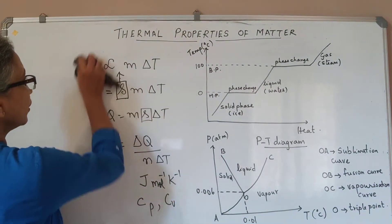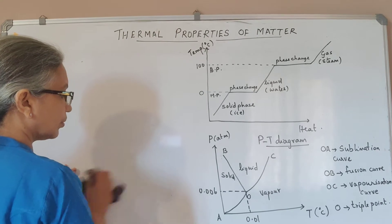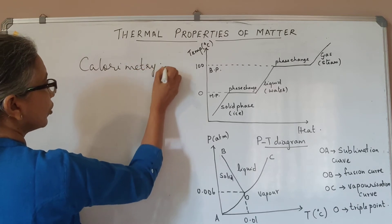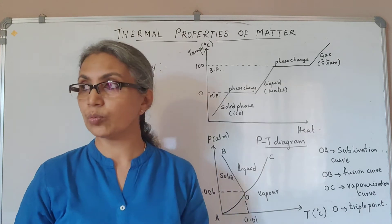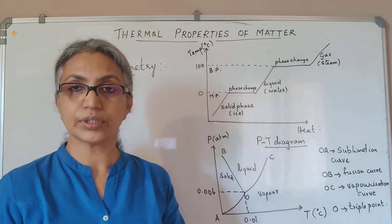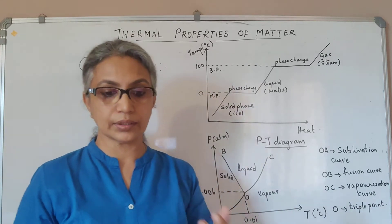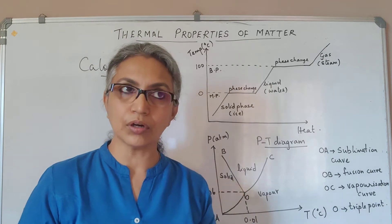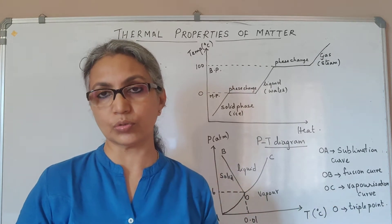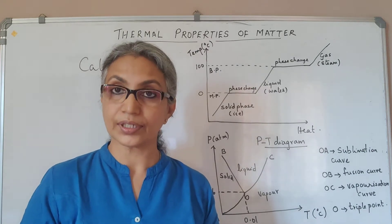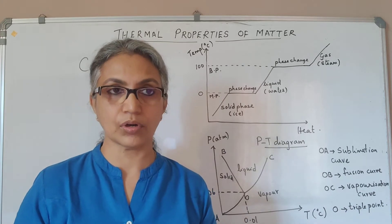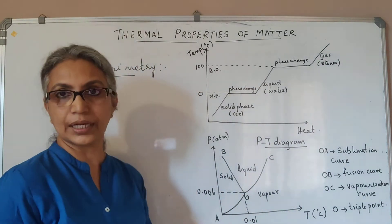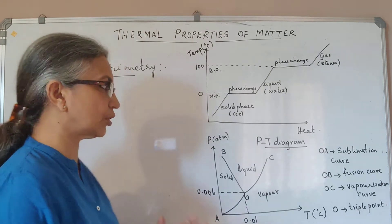We are now going into our next topic: calorimetry, which simply means measurement of heat. If you want to cool a glass of hot milk, you keep it in a bowl of cold water so that the hot milk transfers heat to the cold water until the two come into thermal equilibrium. In an isolated system, the quantity of heat lost by the hot body equals the quantity of heat gained by the cold body — this is the principle of calorimetry.